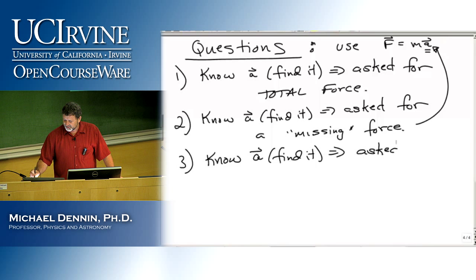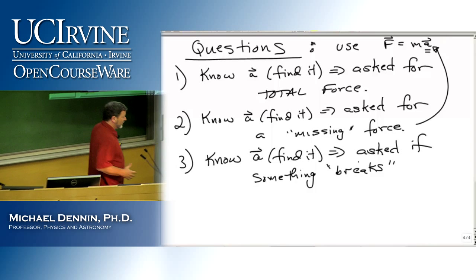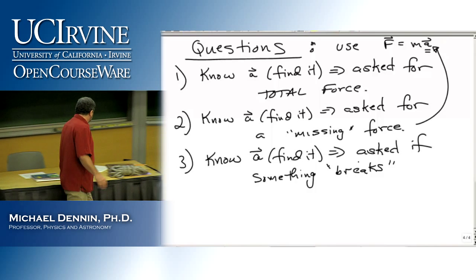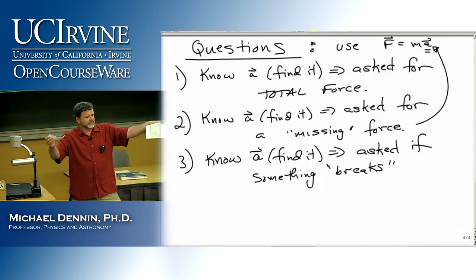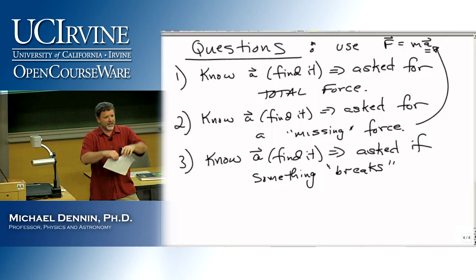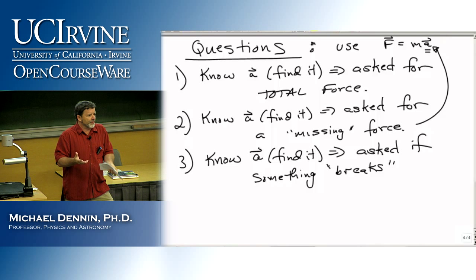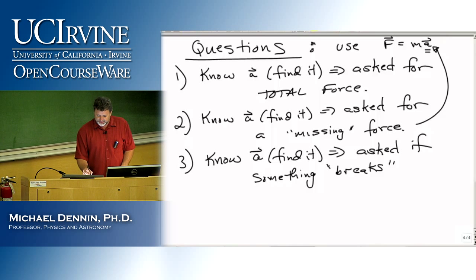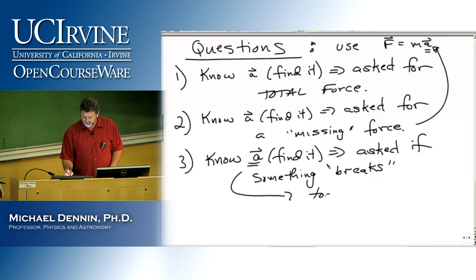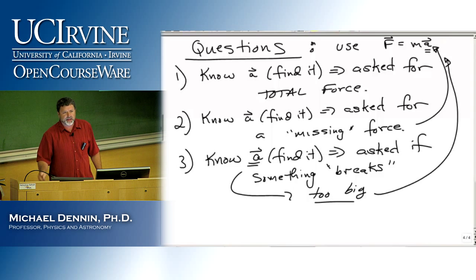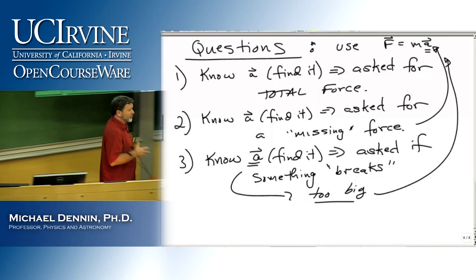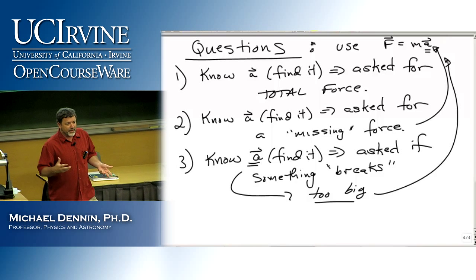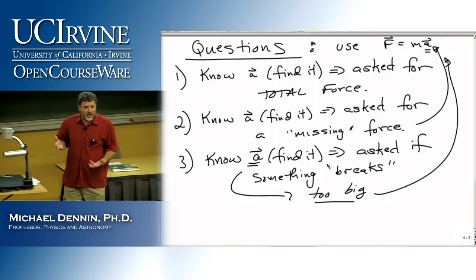Most objects, when subjected to enough force, break. And you'd like to know when that happens. It happens when you try to make an acceleration that is too big. What you do is plug into F equals MA, find out the force that's required, and if the force required to make that acceleration is too big for the object trying to generate it, the object breaks. This would also be very common if you were building things.